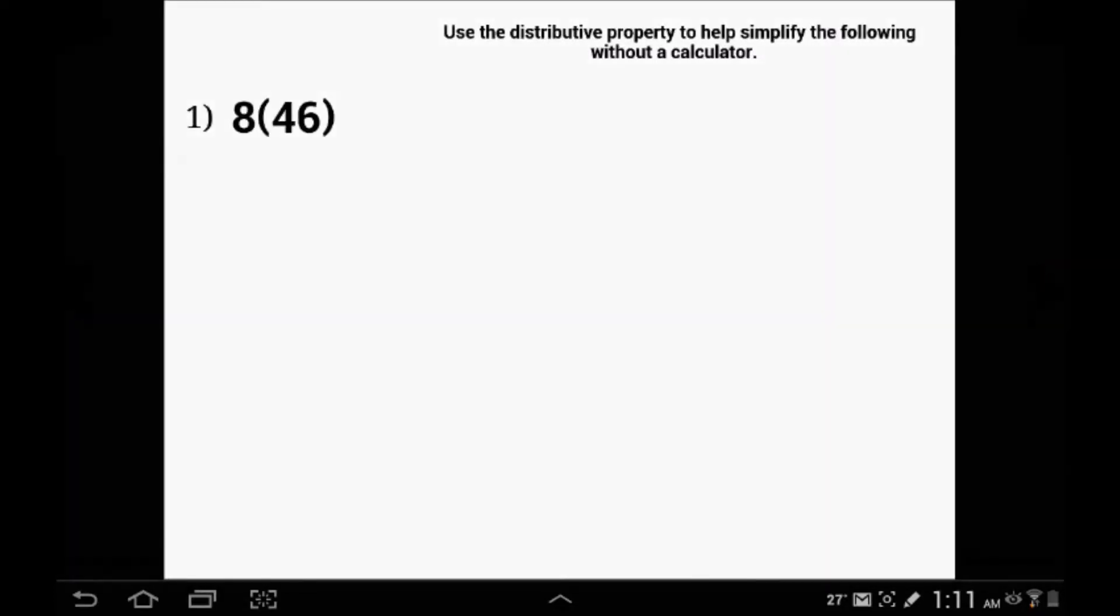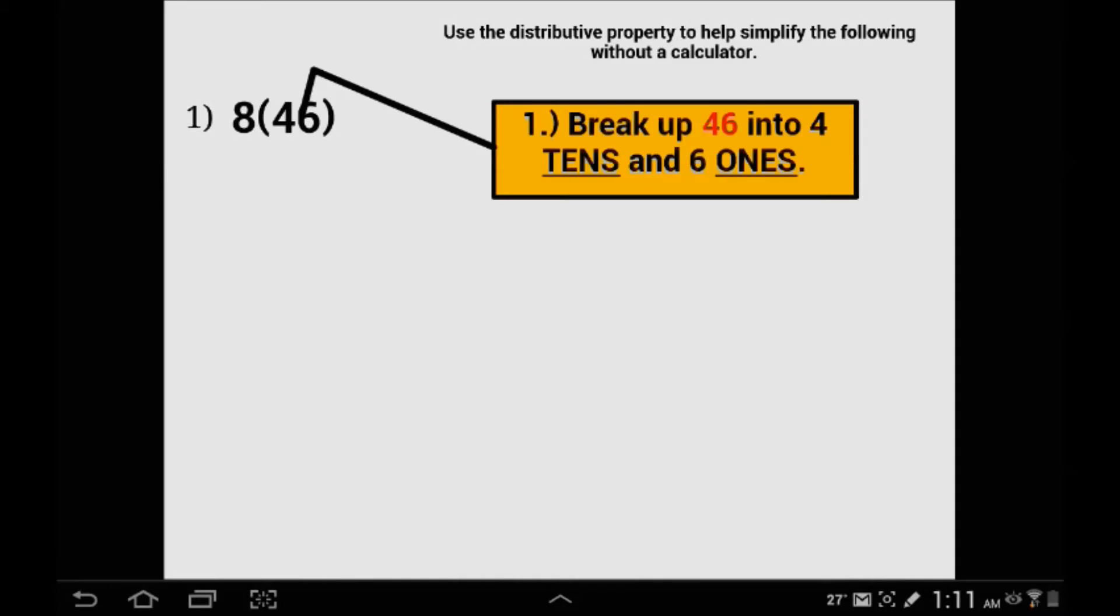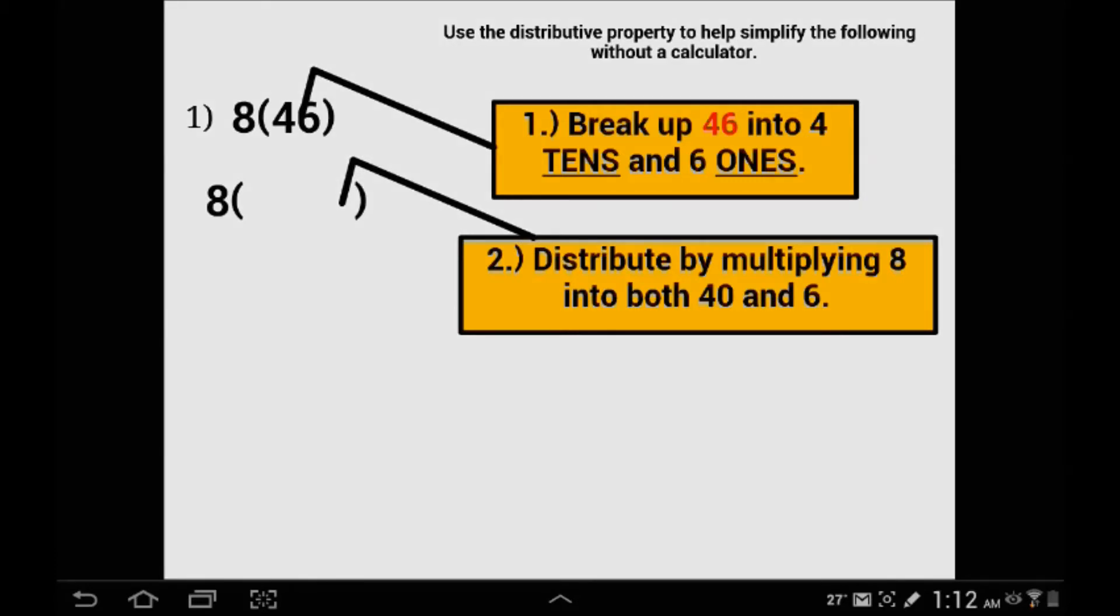In our first example we have 8 times 46. A number next to parenthesis indicates multiplication. We are going to break up the number 46 into two simpler numbers that we can mentally multiply. 46 is made up of 4 tens, basically 40, and 6 ones. We are going to expand the parenthesis and inside write what we broke 46 into: 40 plus 6.